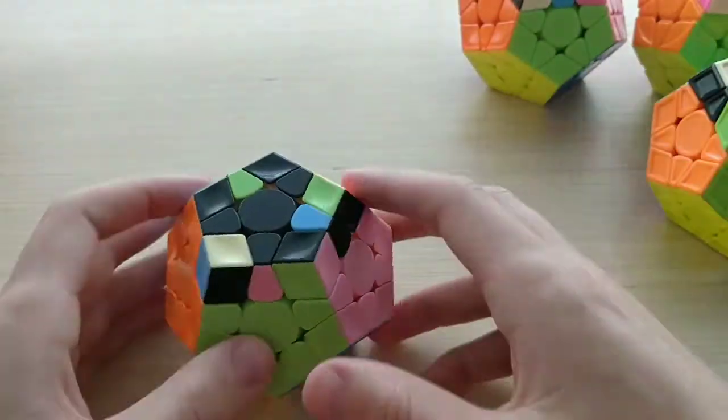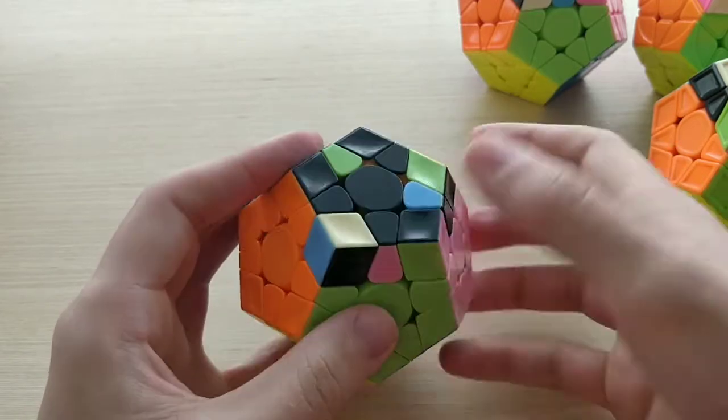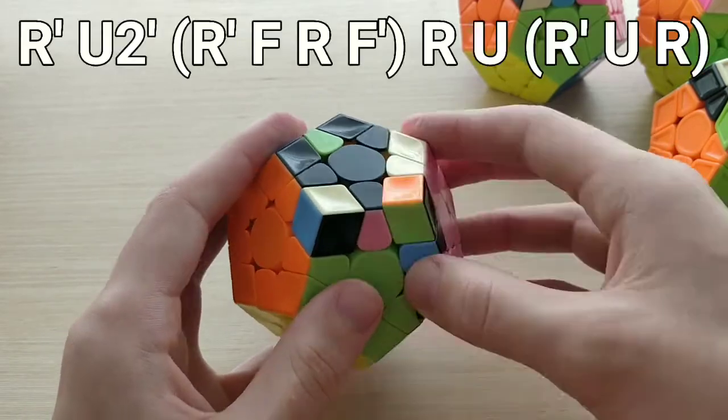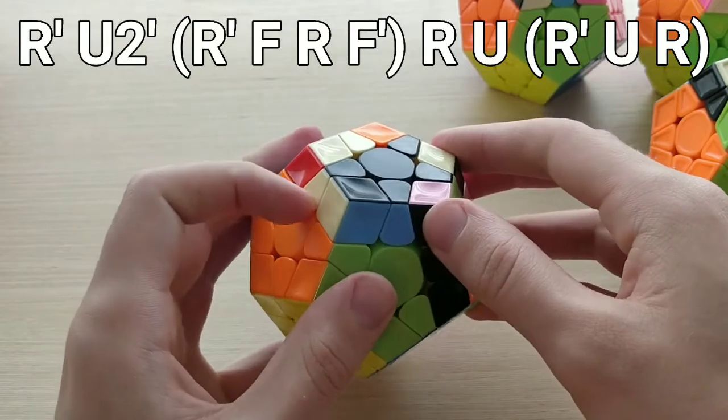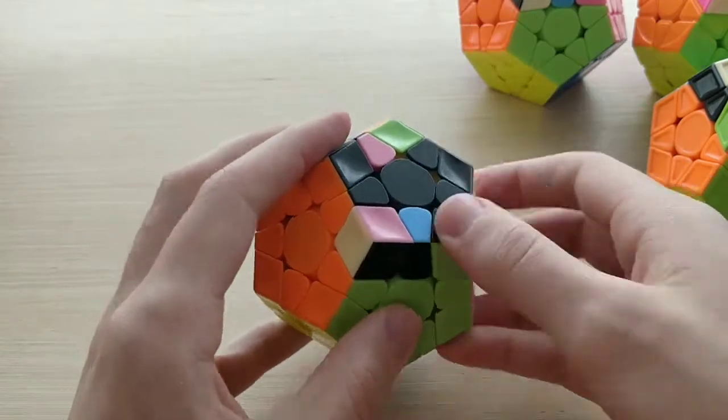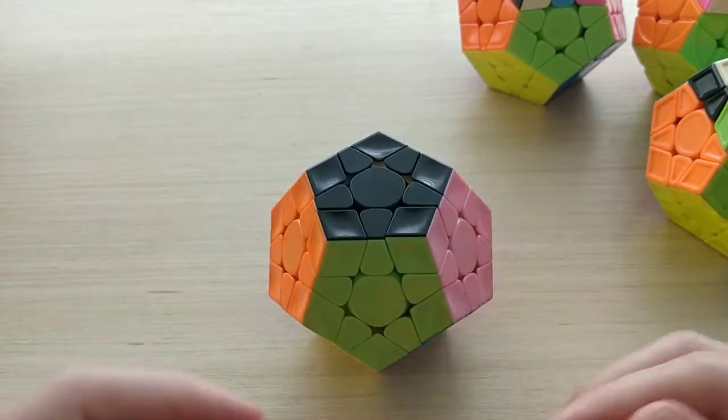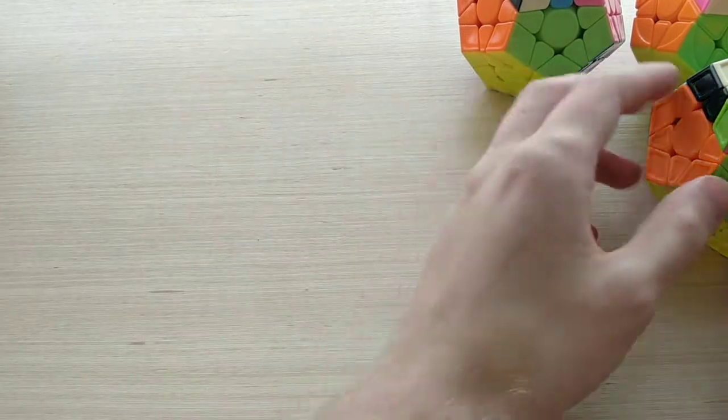As for the algorithms, this first one here, 11B plus, is just from this angle, with the bar on the right, and looks like this. Thumb on top to start with, and then R' U2' sledge R U R' U R. Just super short, super basic turning, probably the best case I've shown in the whole video. It's very nice.